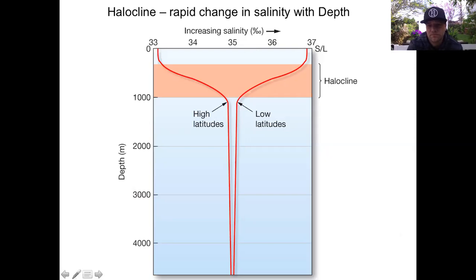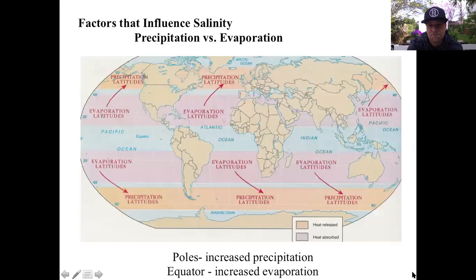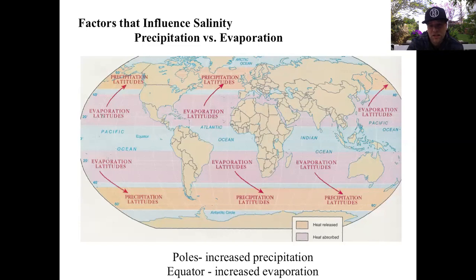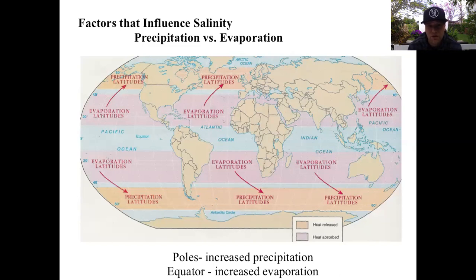These are examples of salinity versus depth shown in chart form. A key concept: why is salinity higher near the equatorial tropics and lower toward the poles? At the poles there is increased precipitation. Near the equator there is also increased precipitation, but simultaneously there is a tremendous amount of evaporation, which drives salinity up in the tropical regions.